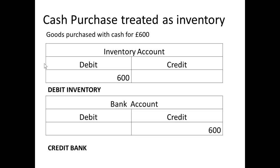However, if we have a cash purchase treated as inventory, then instead of debiting a purchases account, we will debit an inventory account. So the cash purchase for inventory: debit inventory, credit bank.